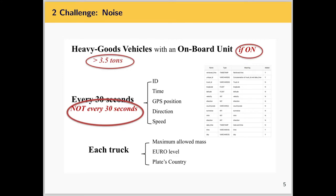Another challenge we face is related to noise. As is very common in data science, OBU data have a lot of potential but the valuable information needs to be cleaned of noise. One contributing factor is that we collect data only from heavy goods vehicles weighing over 3.5 tons, so we do not have a complete picture of traffic. Another aspect is that sometimes drivers forget to switch on their onboard unit devices, contributing to information loss.